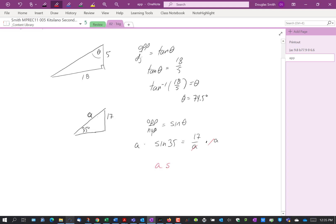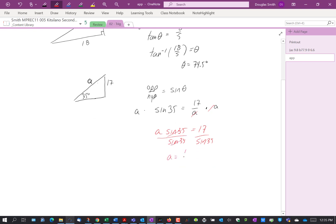So we have A sine 35 equals 17, and then I'll divide both sides by sine 35. Those cancel out, so we get A is equal to 17 over sine 35.